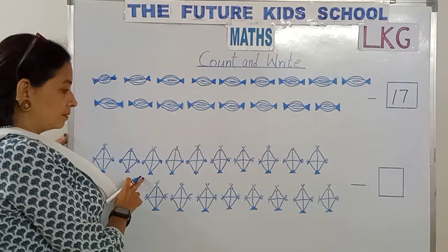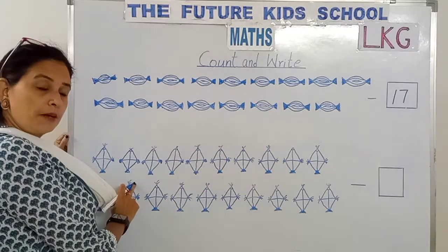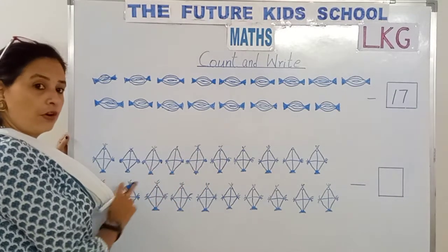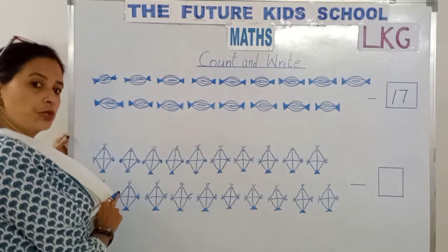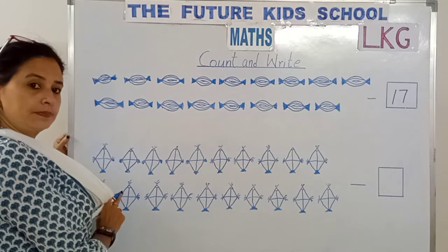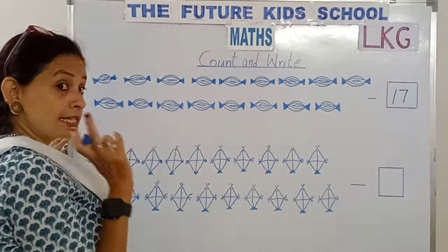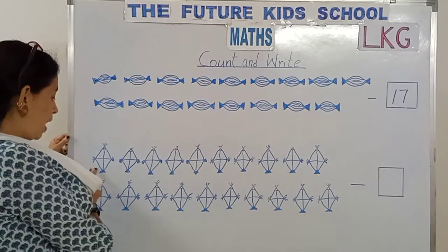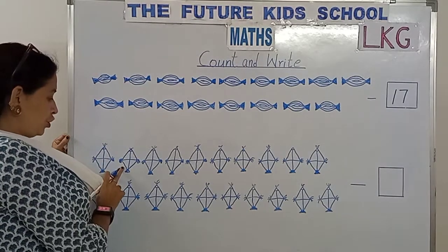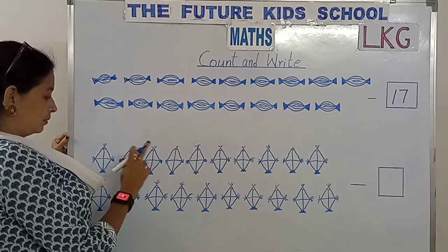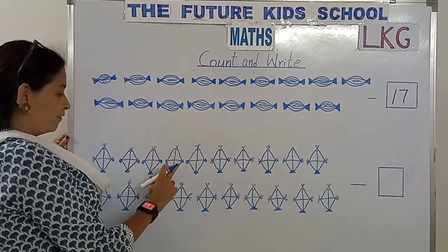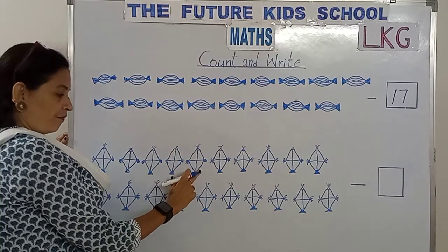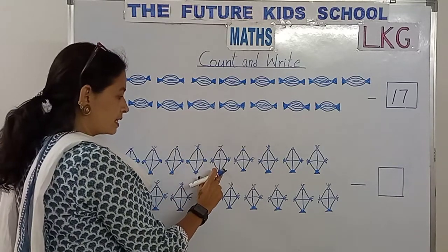Look here, we've got kites over here. Let's count the number of kites. Let's do it together, children. Come, let's count slowly. 1, 2, 3, 4, 5, 6.